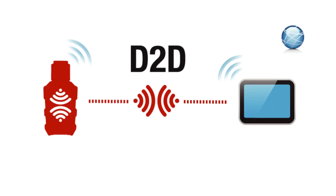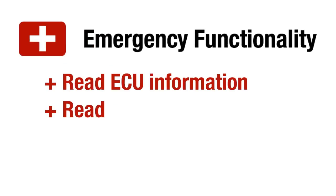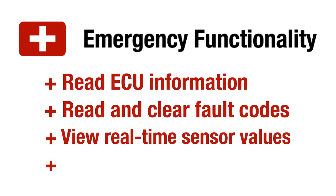When you're out in the middle of nowhere and you only have your phone and a GS911 device in D2D mode, you still have access to the GS911 Wi-Fi's emergency functionality, which will allow you to read ECU information, read and clear fault codes on all control units, as well as view and log real-time sensor values for all engine control units. You can also use the auto scan function in D2D mode, which will give you a readout of all fault codes within seconds.